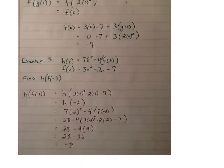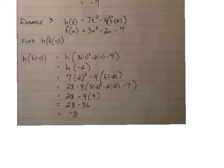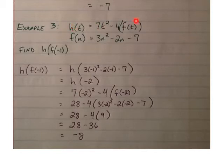In example 3, similar idea. I broke down all of the steps. So h of t we're given, and it includes a rule for f, and f of n we're given. And we're asked to find h of f of negative 1, which means stick negative 1 into the variables for the function f. So we have 3 times negative 1 squared minus 2 times negative 1 minus 7. And if we simplify all of that out, we get negative 2.